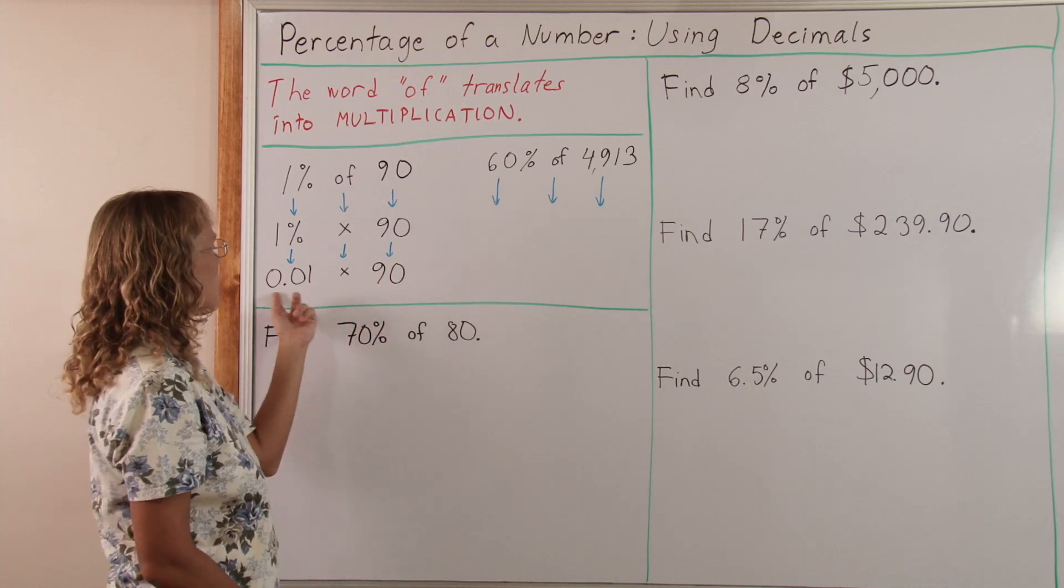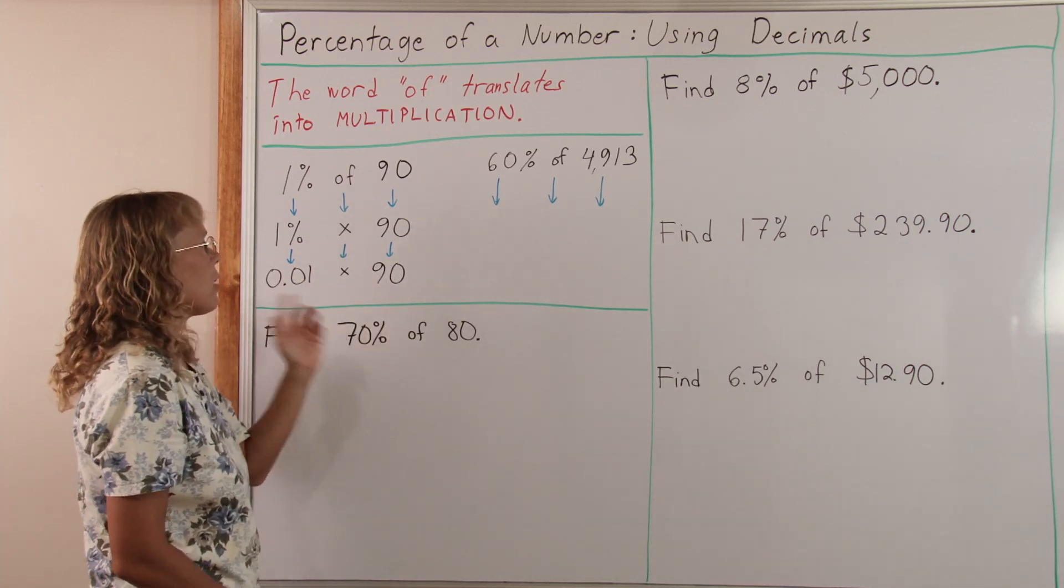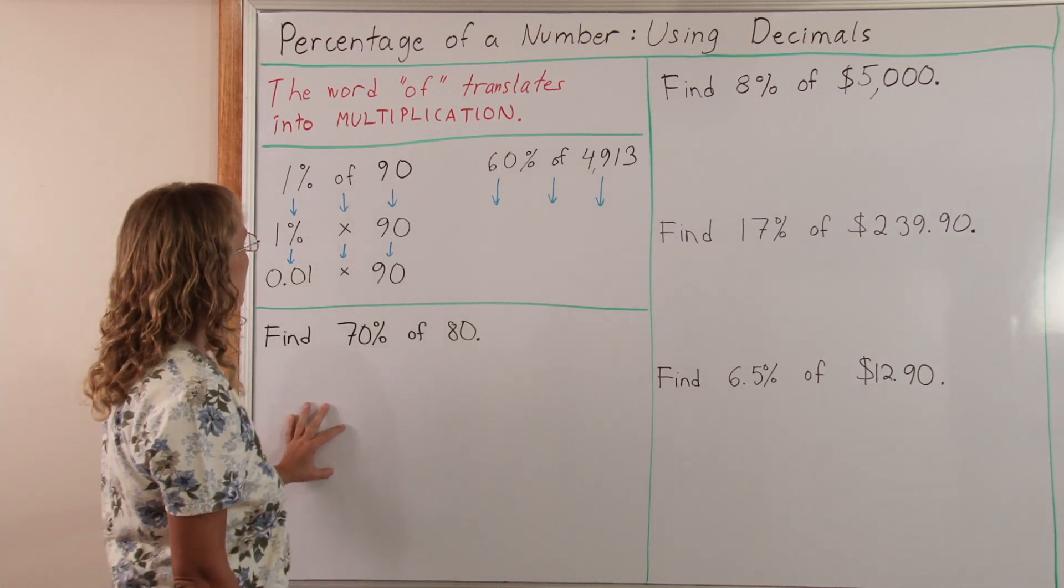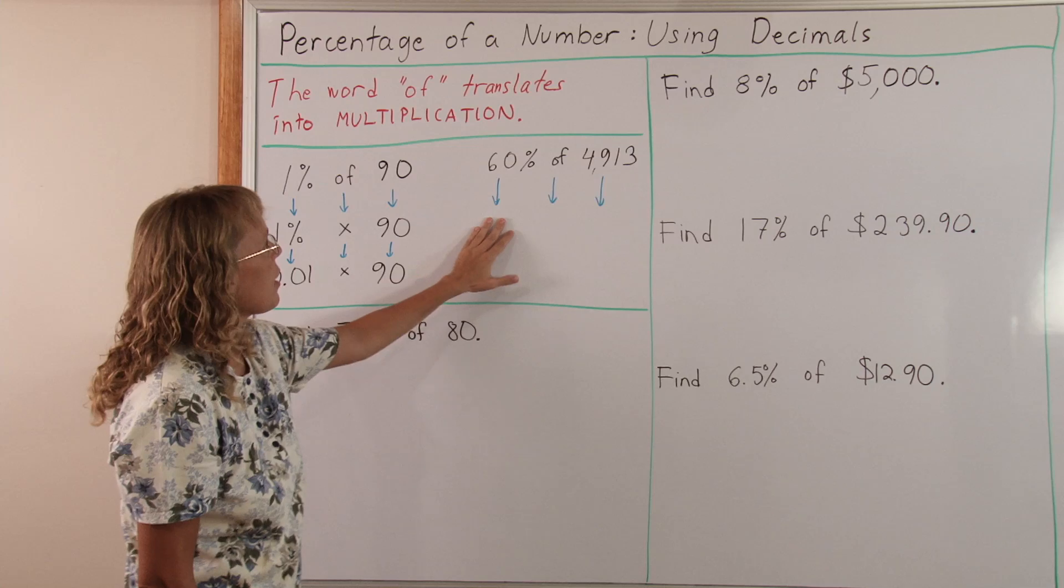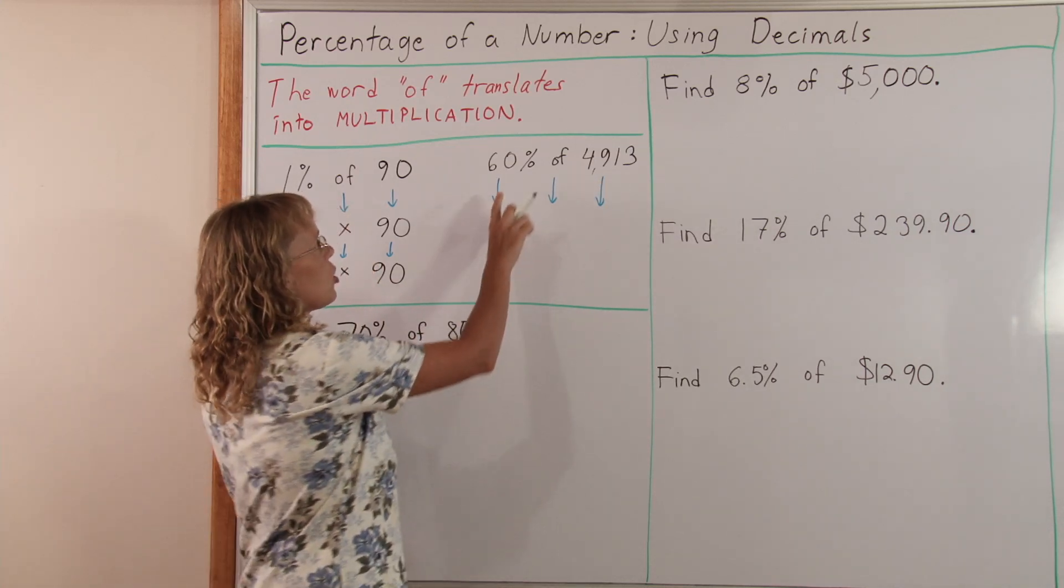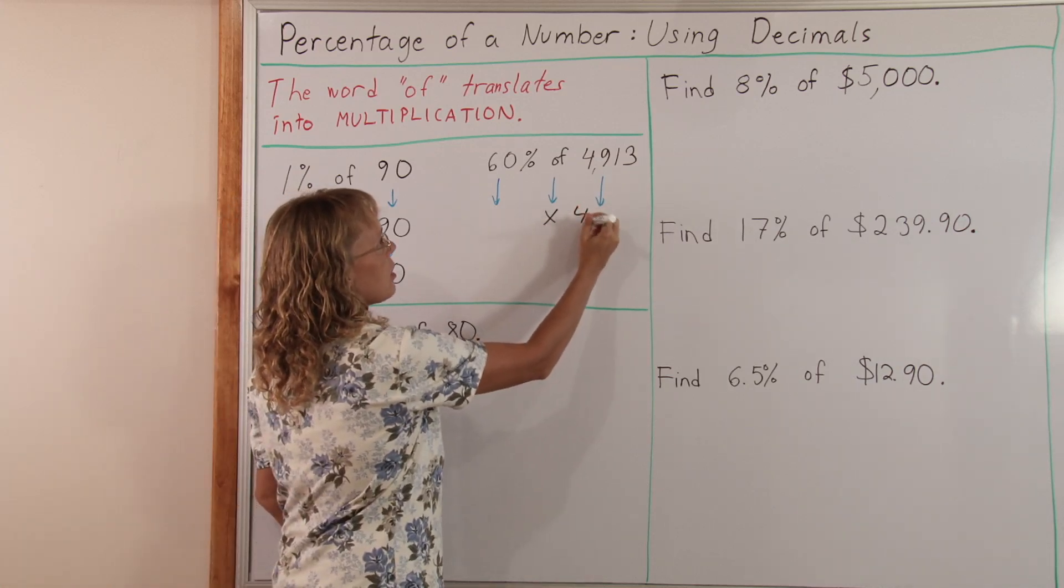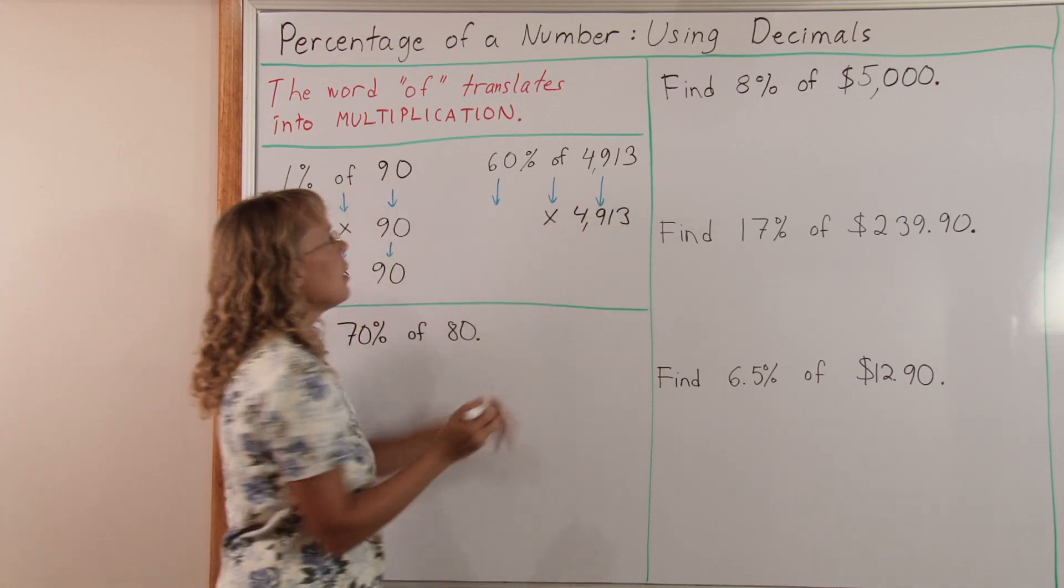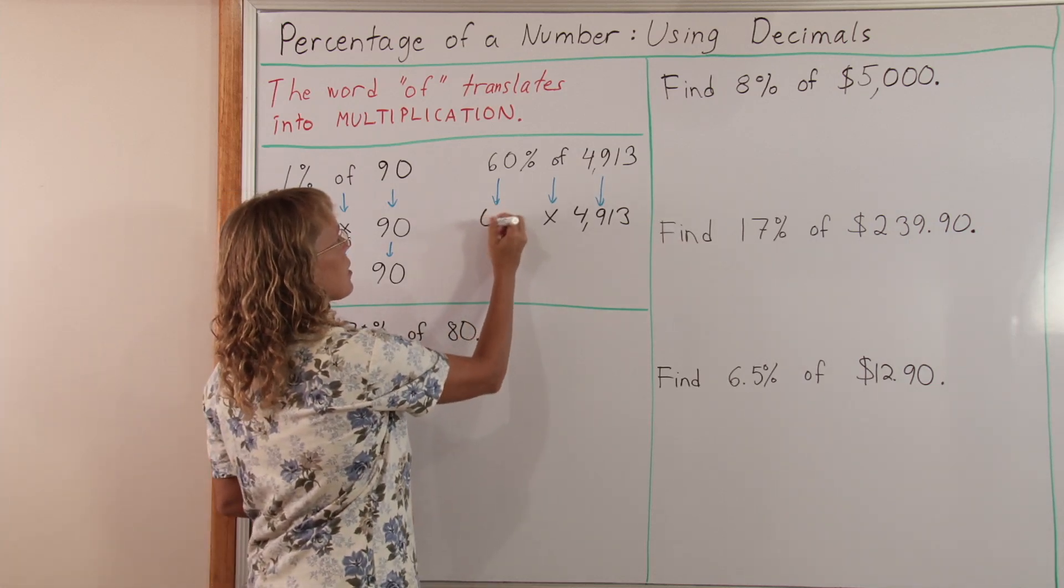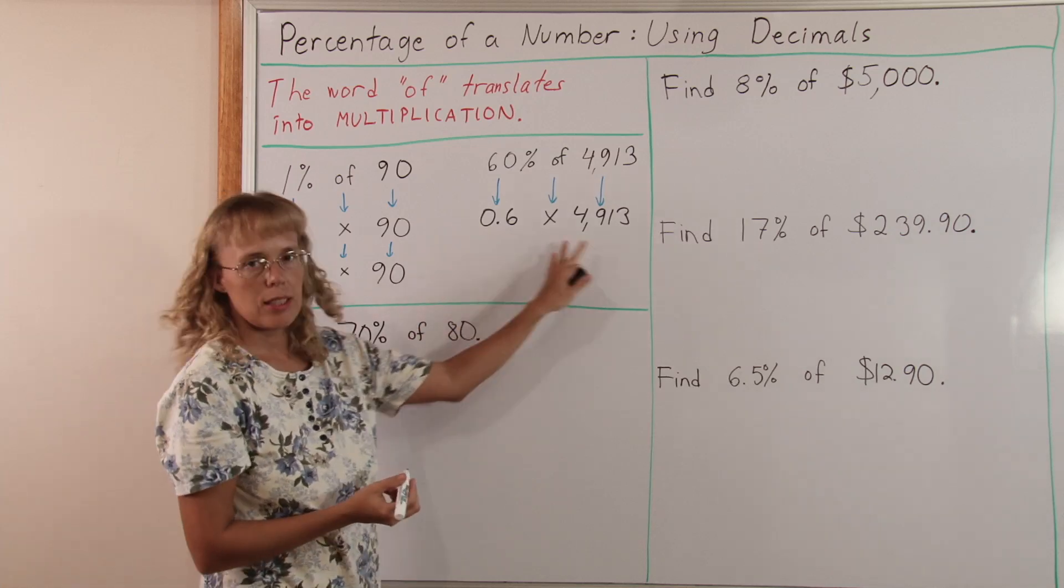And now this last one here is easy to put into a calculator. Or you could multiply also using normal multiplication on pencil and paper. Here's another example. 60% of some big number, you change of to multiplication. The number doesn't change. And 60% is written as a decimal. It would be six tenths 0.6. And then this into a calculator.